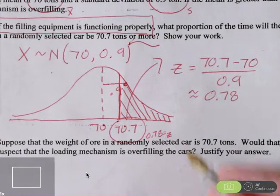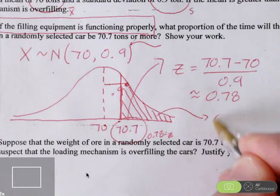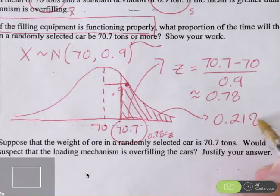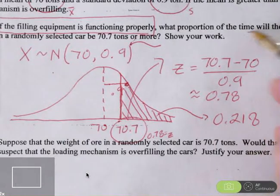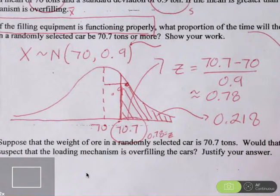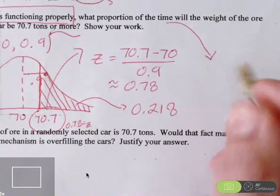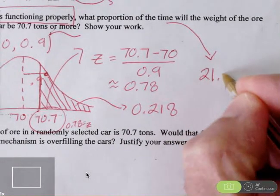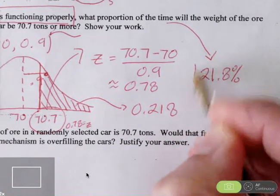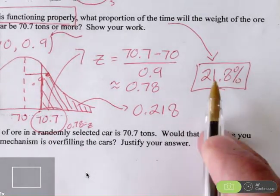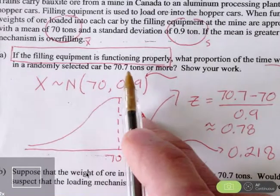Let's go and label that. This area is 0.218. The proportion of the time that we will get a weight of 70.7 tons or more is 21.8% of the time. And remember, this is under the assumption that the filling equipment is functioning properly.